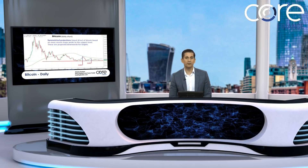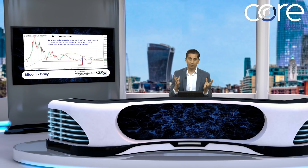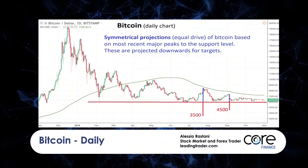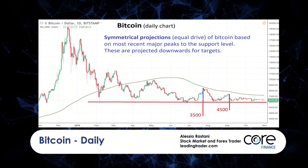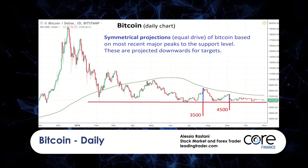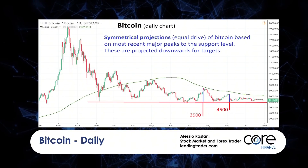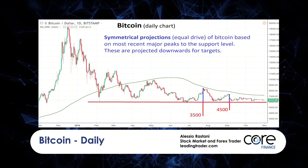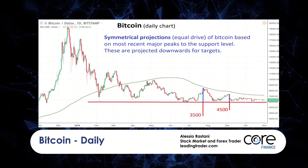But here's the question we want to ask in this video: there is still a risk that Bitcoin could actually break the floor and break that 6,000 to 5,900 floor. What happens next? What we're going to try and figure out is, if there is still this risk that Bitcoin could break that floor, how much lower could we go?